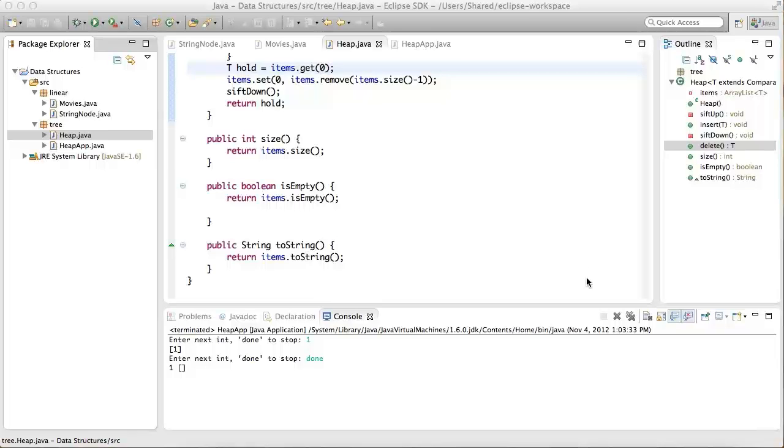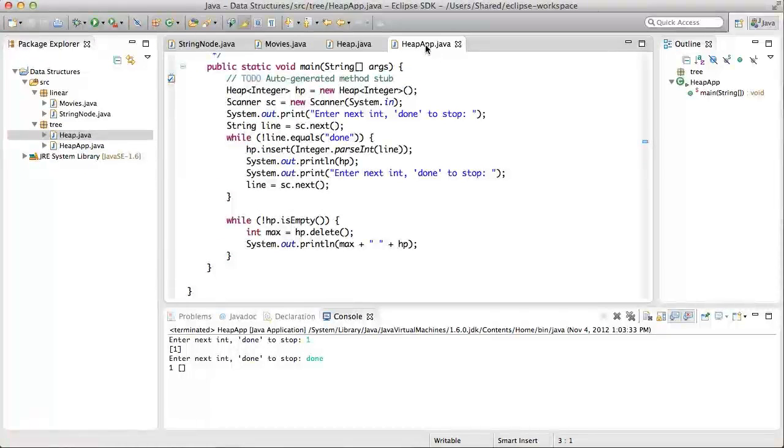Let's now take a look at a simple application that exercises the heap implementation. I call this application heapApp. We start by creating a new heap object for integers. A scanner will read input the user types at the terminal to add integers one at a time to the heap. For every integer input by the user, the heap's insert method is called on the HP object to insert it, following which the heap is printed. When the user enters done, the insertion sequence ends.